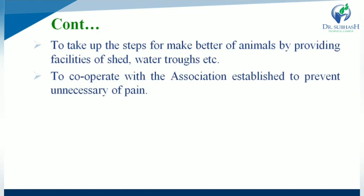The Animal Welfare Board of India also takes steps to improve conditions for animals by providing facilities such as sheds, water, and draught facilities. It also cooperates with associations established to prevent unnecessary pain. That is about the Animal Welfare Board of India.